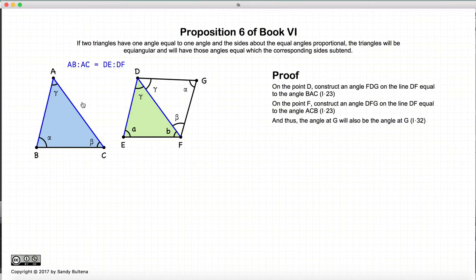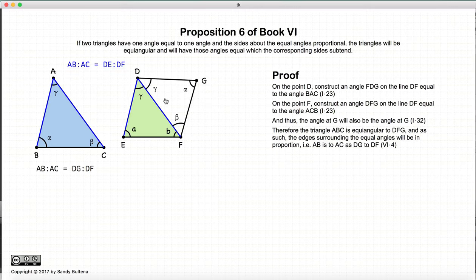So now we have two triangles: gamma, alpha, beta, gamma, alpha, beta. These two triangles are equal angular. And because they're equal angular, then the ratio of the sides will also be equal, according to Proposition 4 of this book. So we have that AB to AC is equal to DG to DF.